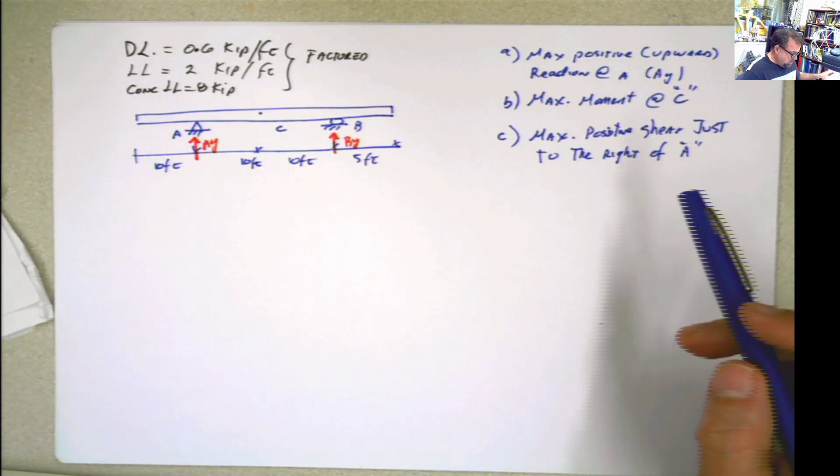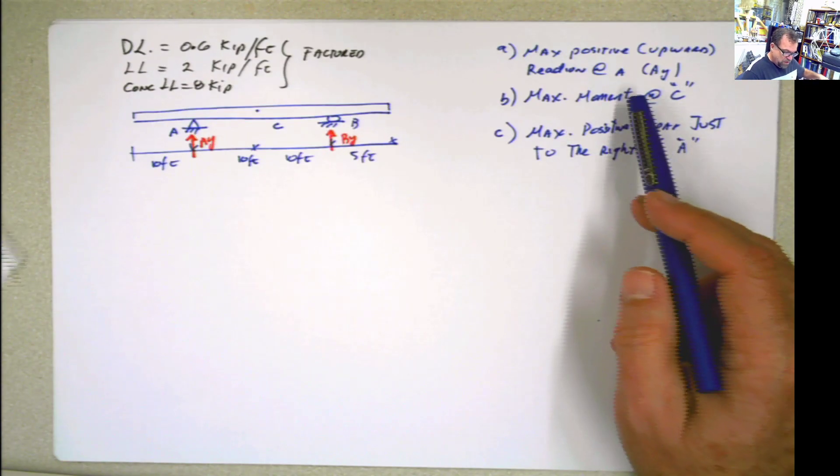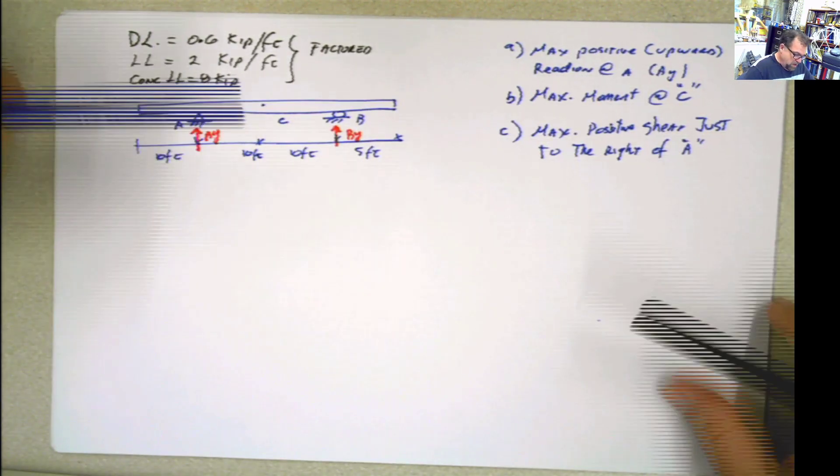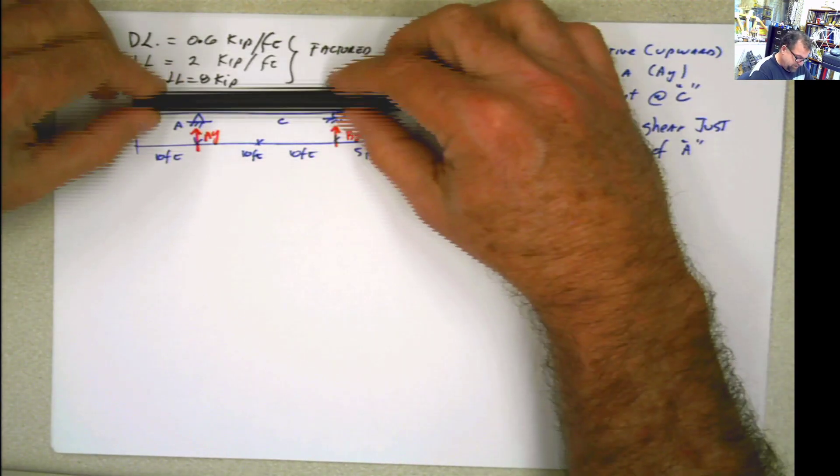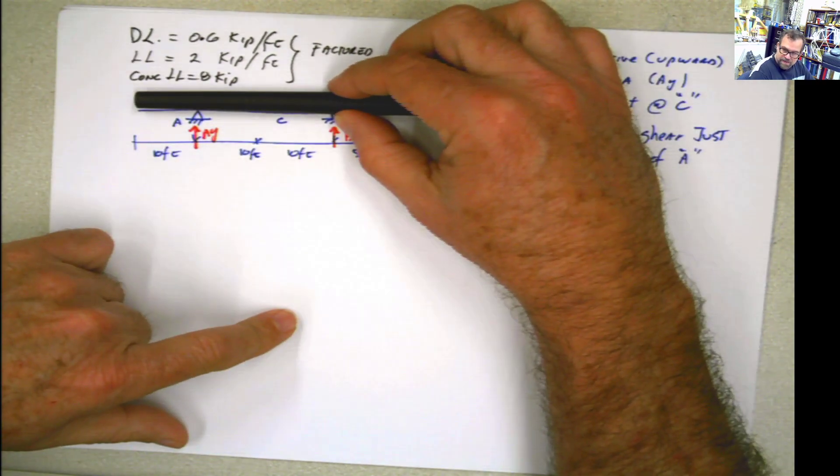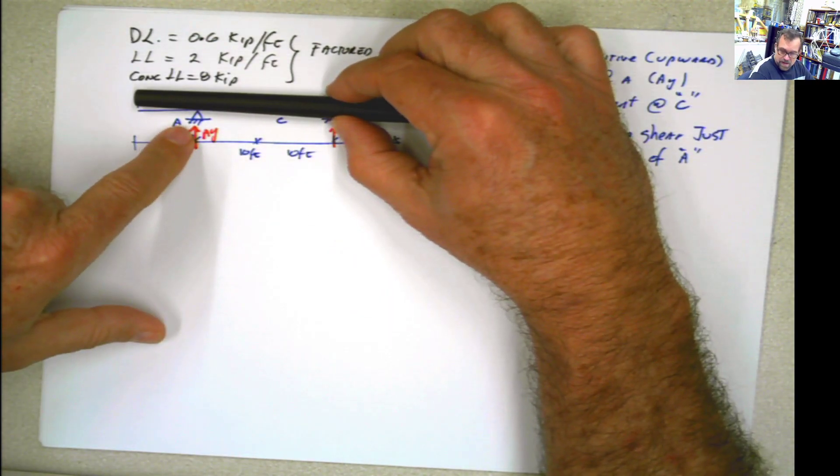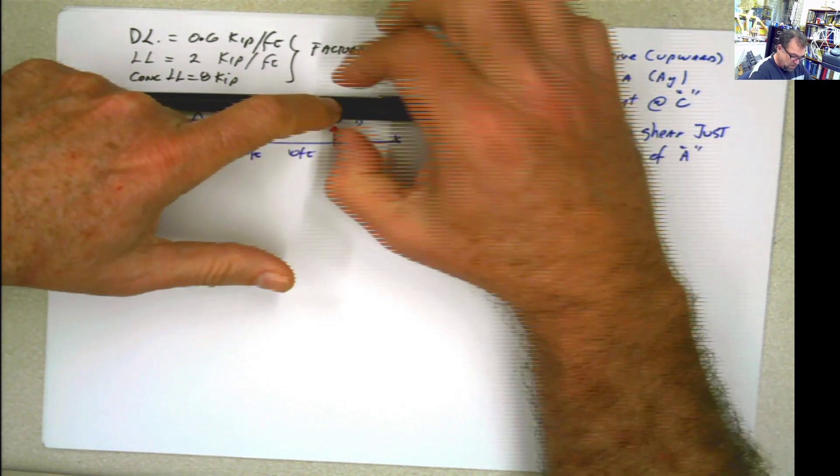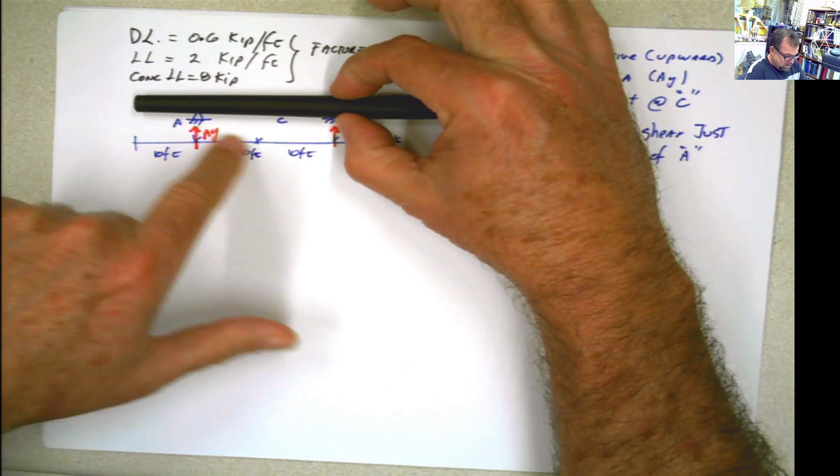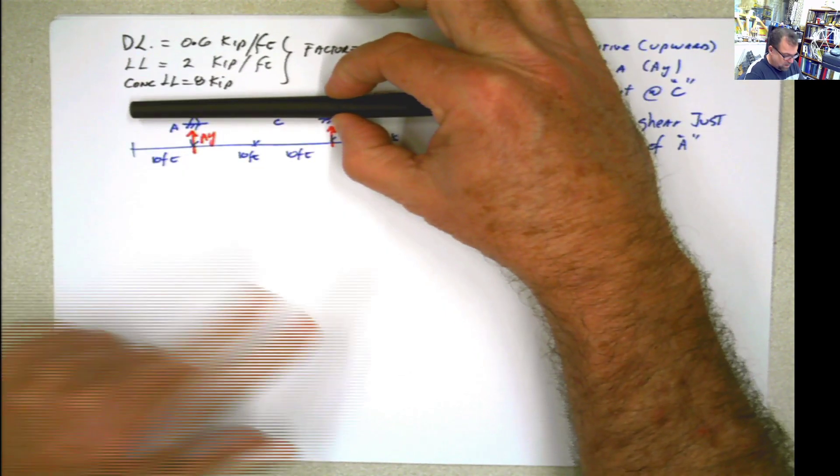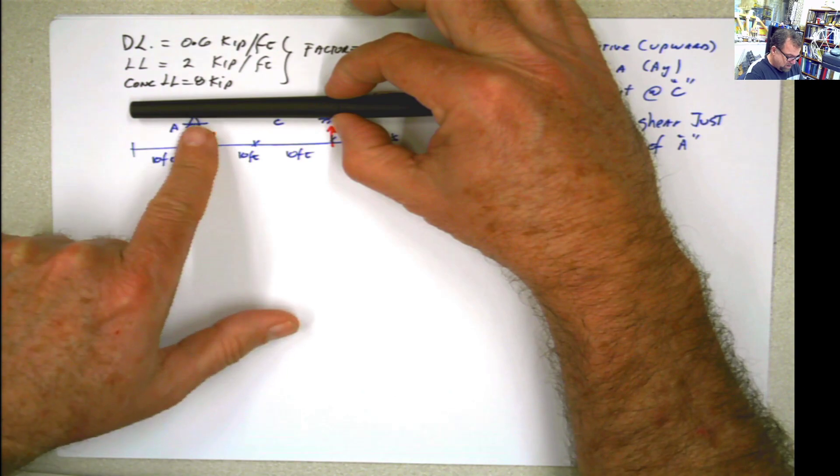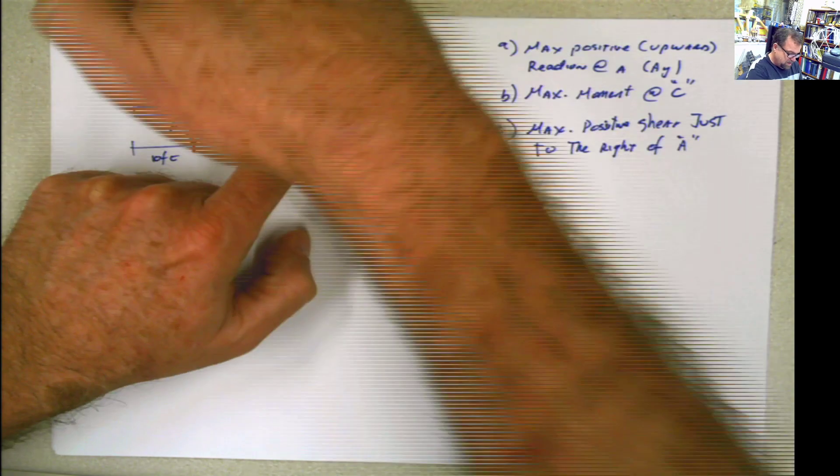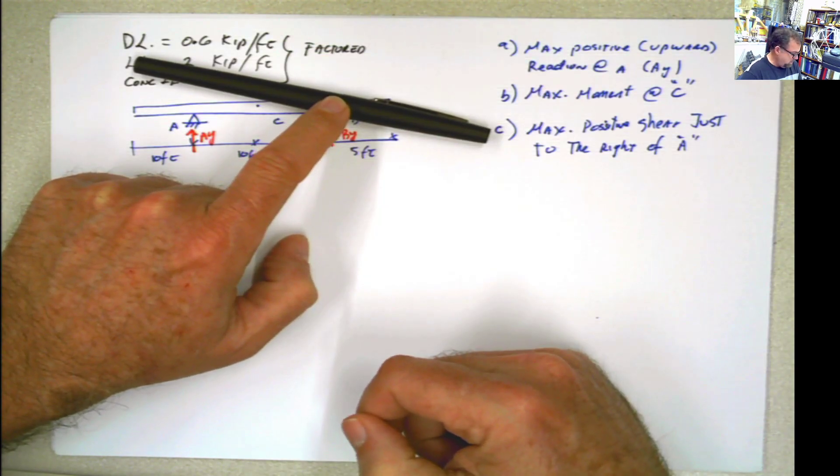Let's start with the first part, maximum positive upward reaction at A. How do you do that with Muller-Breslau? If this is the beam that we have, and we have to find the reaction AY, what we have to do is we keep this roller right there, and we release the vertical reaction here. And then the only thing that we do is we apply a displacement in that part, a virtual displacement. And this is going to be the shape of the influence line for that.